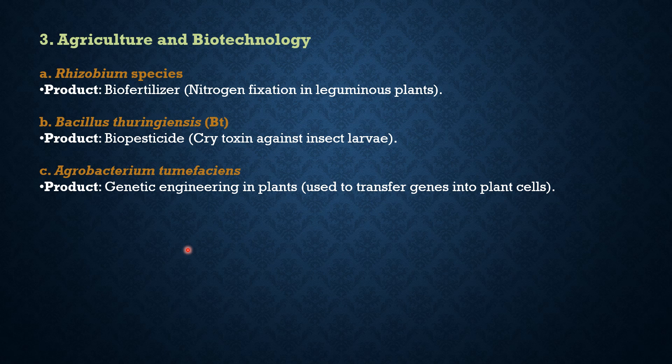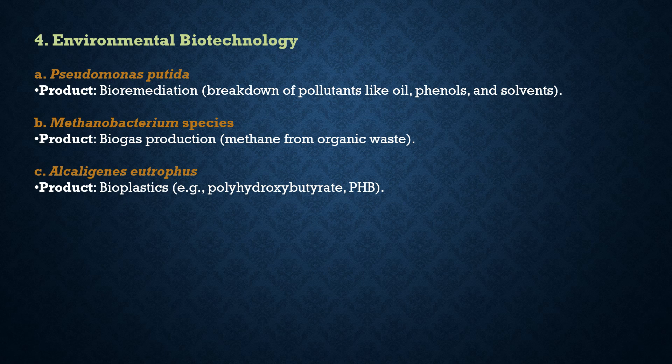Agrobacterium tumefaciens is used in genetic engineering of plants, specifically to transfer genes into plant cells. The advantage is it enables the creation of genetically modified crops with enhanced traits like pest resistance and herbicide tolerance. The disadvantage is public concern over GMOs and their impact on ecosystems and human health, as well as the risk of horizontal gene transfer to other organisms.